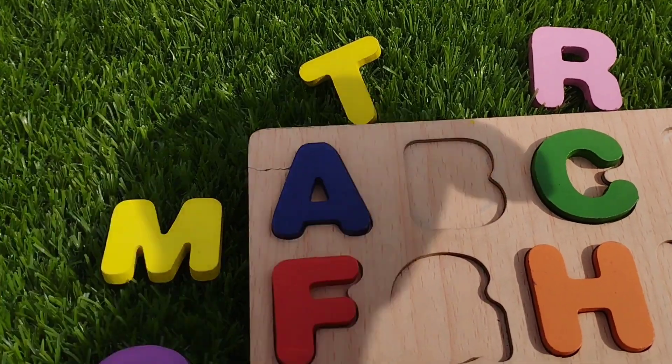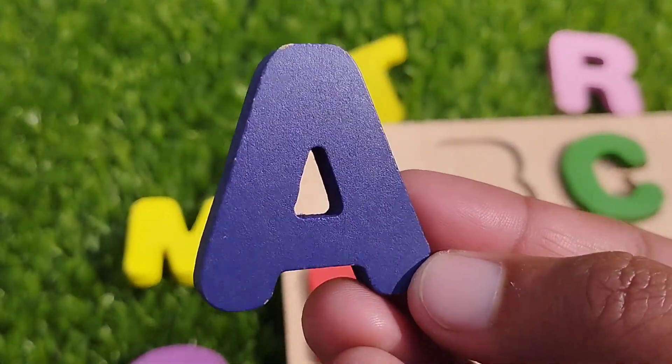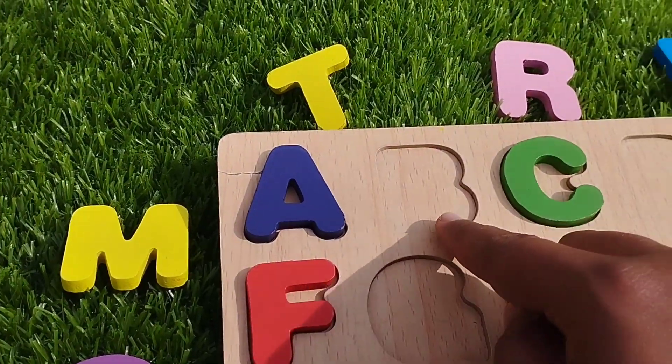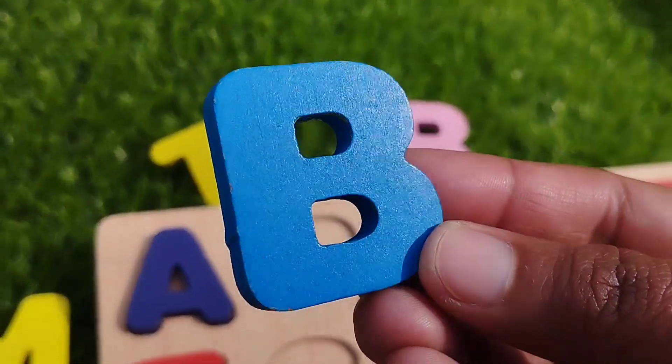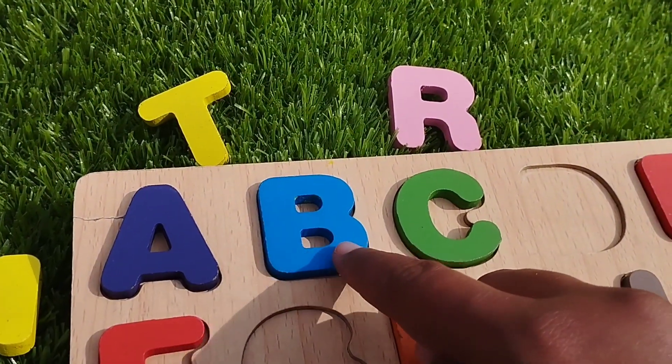The first letter is letter A. A for apple. This is letter A. The next letter is B. Where is B? This is letter B. B for boy.